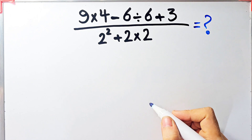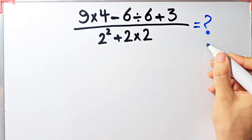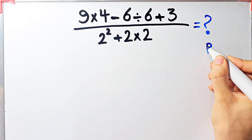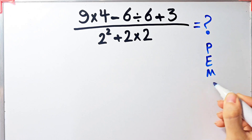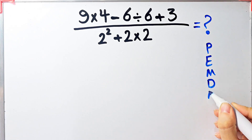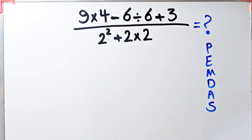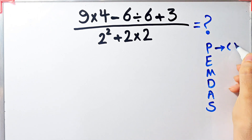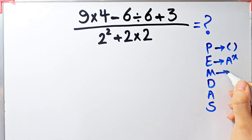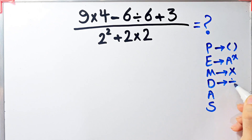To solve this question we need to follow the order of operations, which is PEMDAS. PEMDAS shows the priority of mathematical operations, and if you don't pay attention to this rule you get the wrong answer. P stands for parentheses, E stands for exponent, M stands for multiplication, D stands for division.